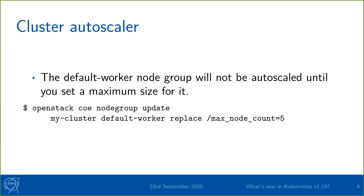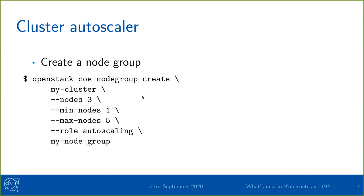Unfortunately this isn't possible to set in the cluster create command, so you need to do this extra command. If you want to scale something that is not the default node group, you can create an extra node group where you can give the maximum number of nodes on creation, set it to the auto-scaling role, and it will be picked up by the auto scaler.